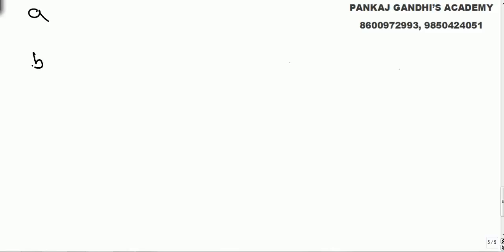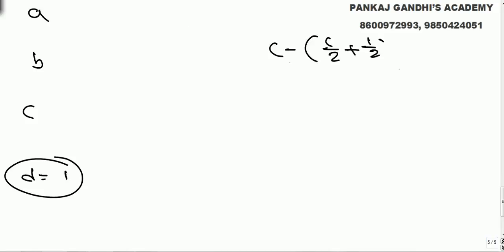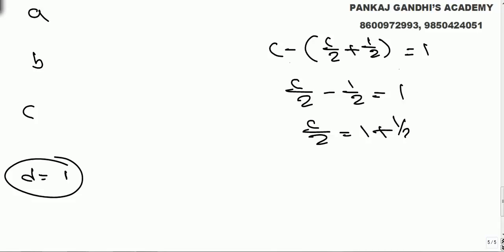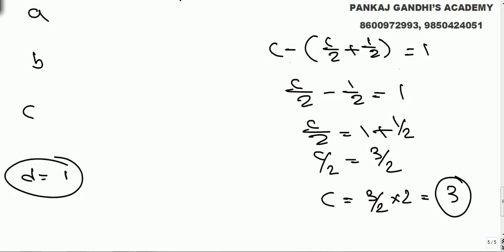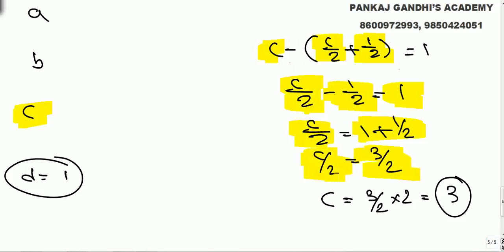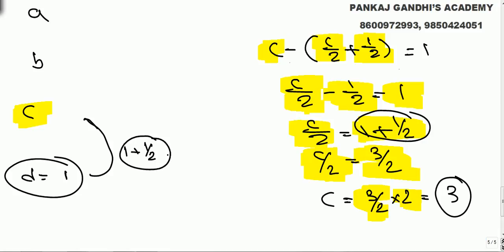Now for the shortcut logic: before meeting the last guard he had c; out of c he gave c/2 and half. After solving, the minus sign on the right becomes plus, and dividing by 2 becomes multiplying by 2. So the shortcut is: to each guard he gives half of the remaining and half more. What is 'more'? We add that half more first — add the more part — then multiply by 2.